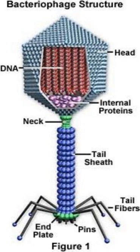Double-stranded DNA is present inside the head. The DNA is highly coiled and tightly packed. It contains more than 75 genes.